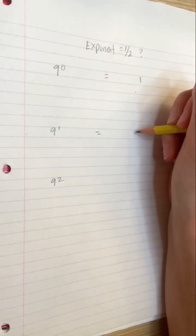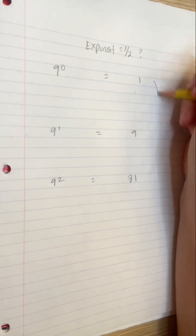9 to the power of 0 is 1, 9 to the power of 1 is 9, and 9 to the power of 2 is 81.